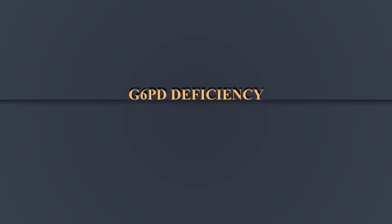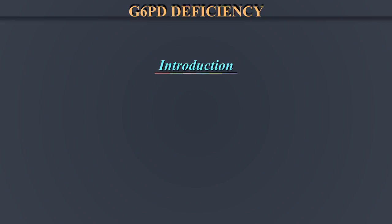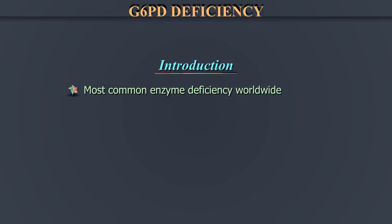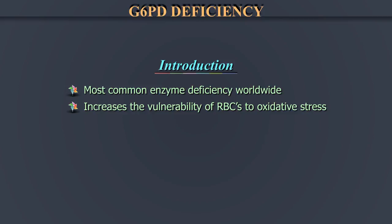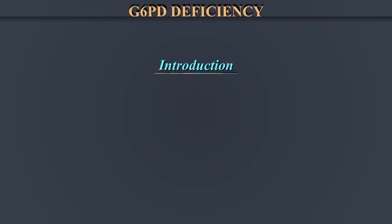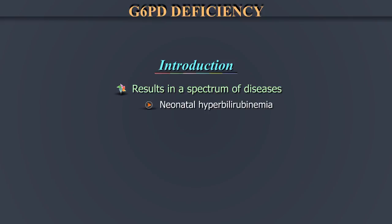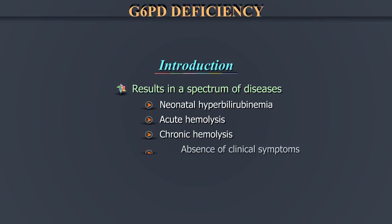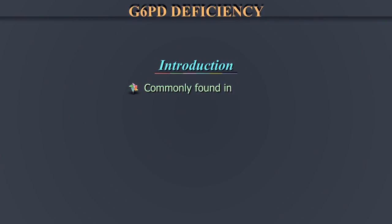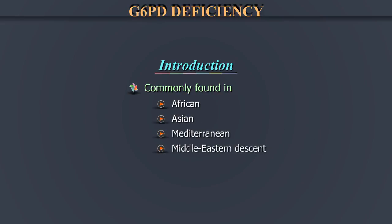Glucose-6-phosphate dehydrogenase deficiency, or G6PD, is the most common enzyme deficiency worldwide. It increases the vulnerability of RBCs to oxidative stress, resulting in a spectrum of disease which includes neonatal hyperbilirubinemia, acute hemolysis, chronic hemolysis, or absence of clinical symptoms. It is most commonly found in persons of African, Asian, Mediterranean, or Middle Eastern descent.